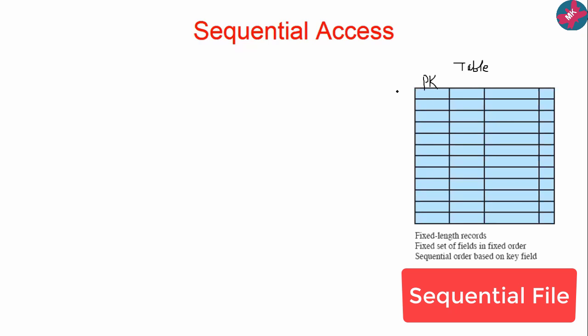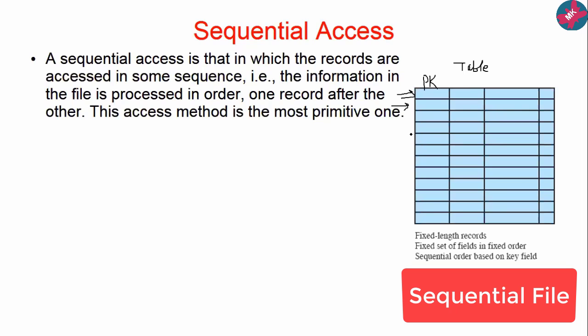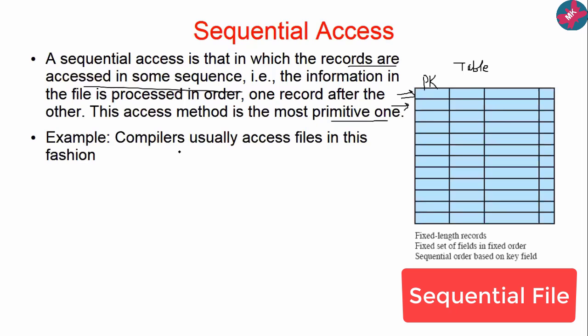Sequential access means records are stored in some sequence, like rows in a table one by one. This is one of the most primitive — that is, oldest — methods. It was mostly used in times when we were using magnetic tapes. Compilers also access files in this fashion, taking all your code one by one and compiling it sequentially.